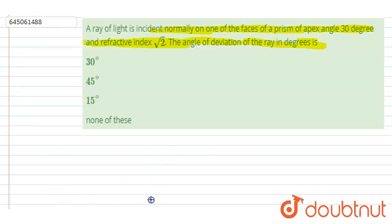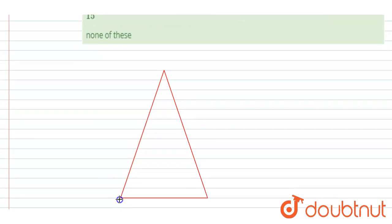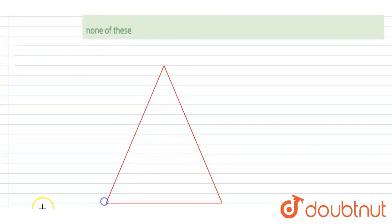let us draw a prism first. Here it is said that the angle of the prism, this angle, is 30 degrees.